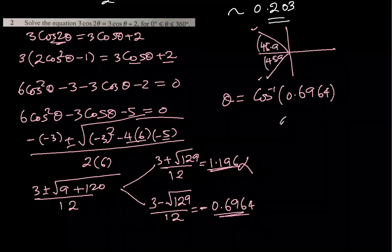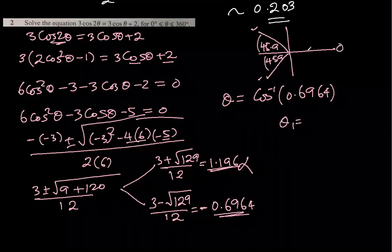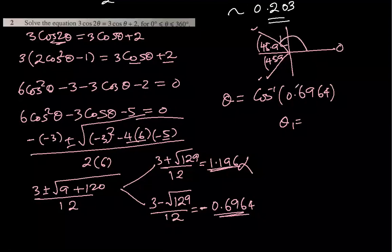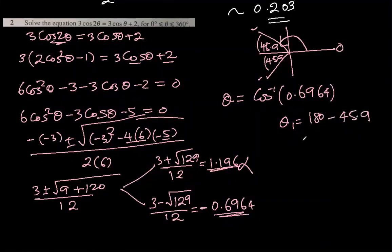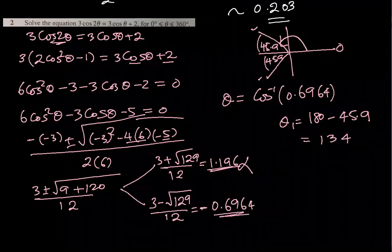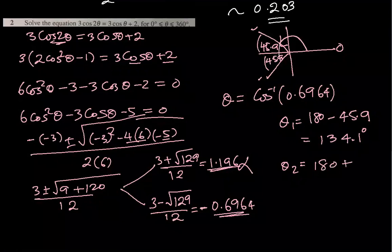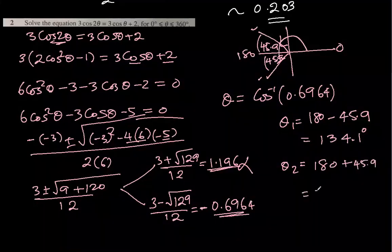So we have two answers now. First one, θ₁: we start from 0 degrees and go to the line created in the first quadrant, which is 180 minus 45.9, that is 134.1. They say that if the angles are in degrees, we can give answer up to one decimal place. Second answer will be 180 plus 45.9, which is 225.9 degrees.